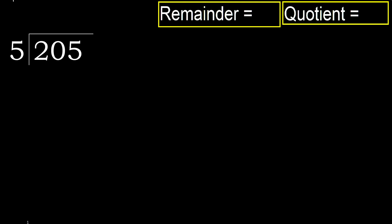205 divided by 5. 2 is less, therefore next. 20 is not less, therefore with 20.